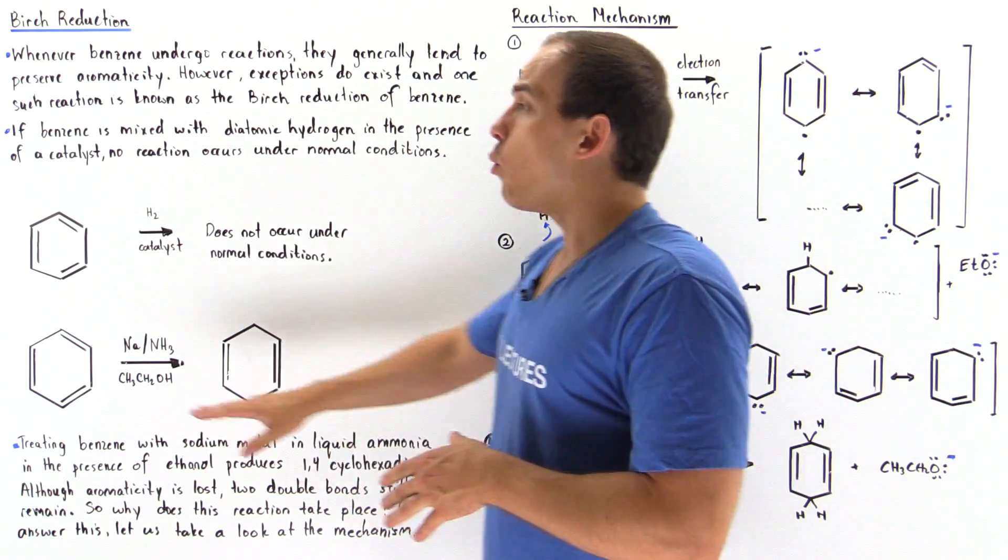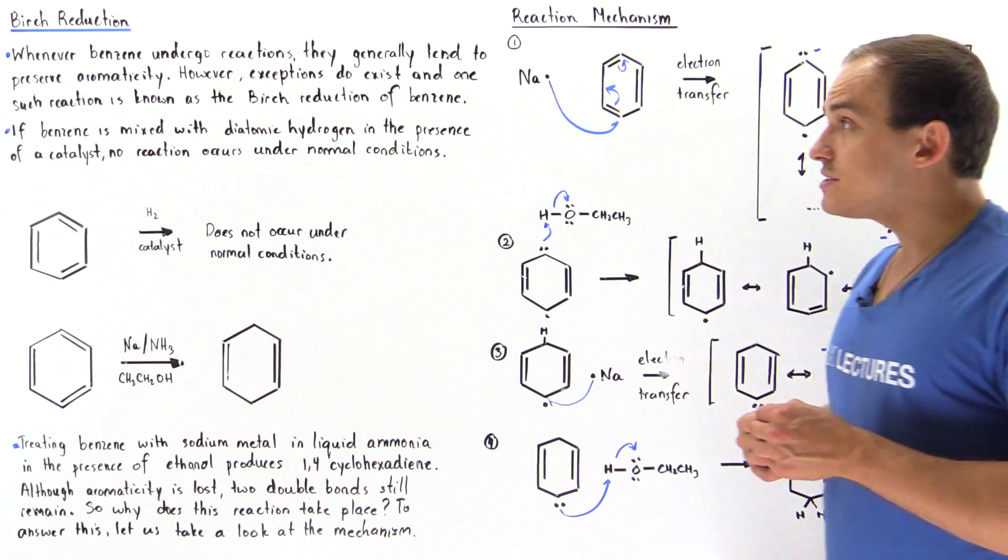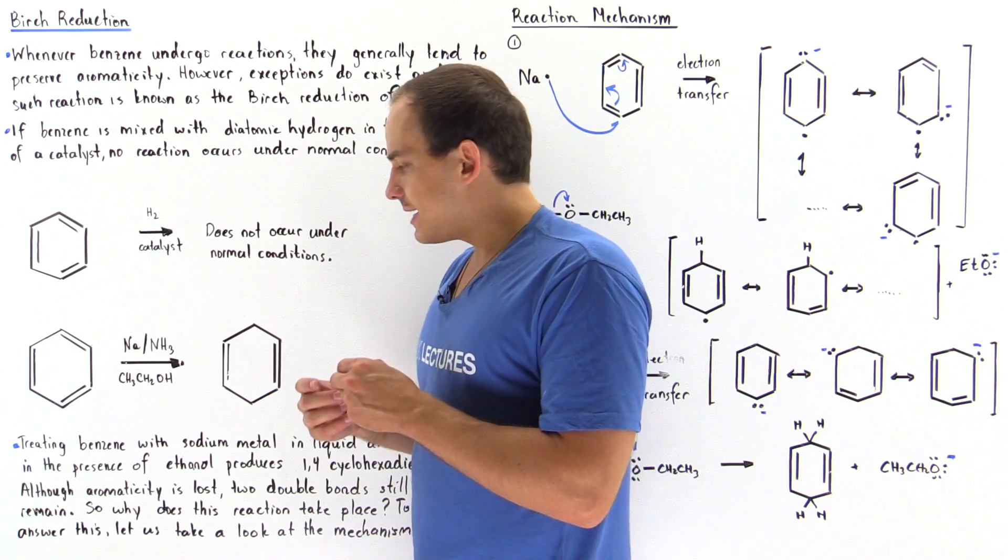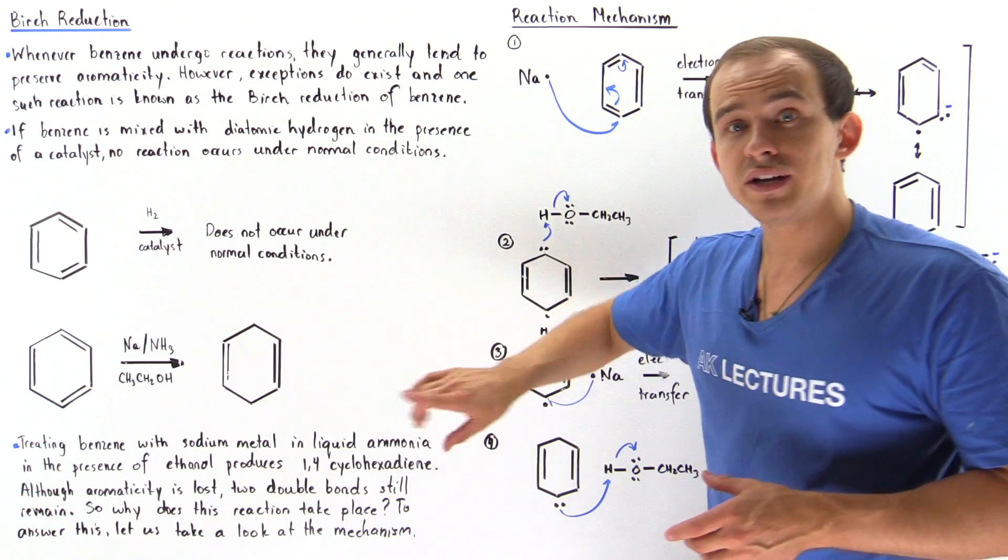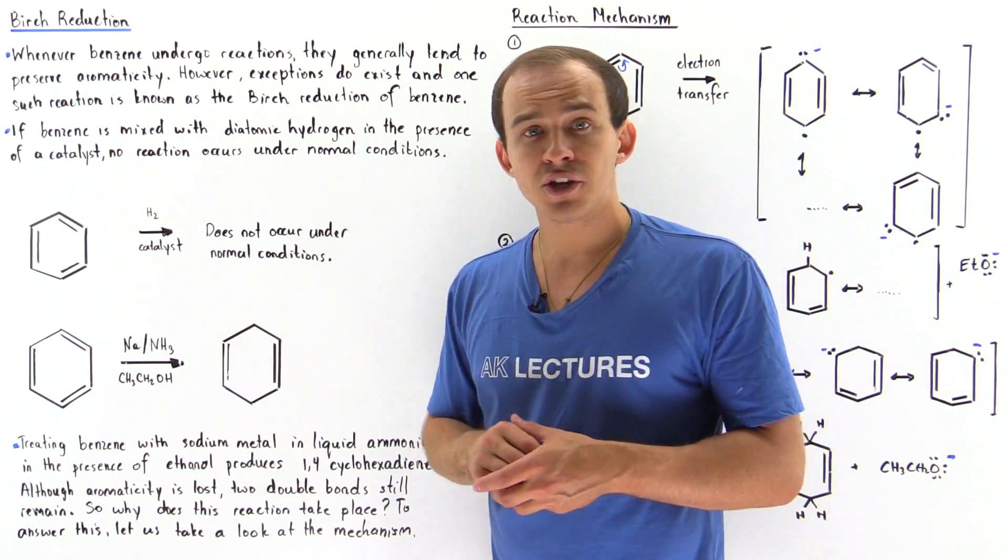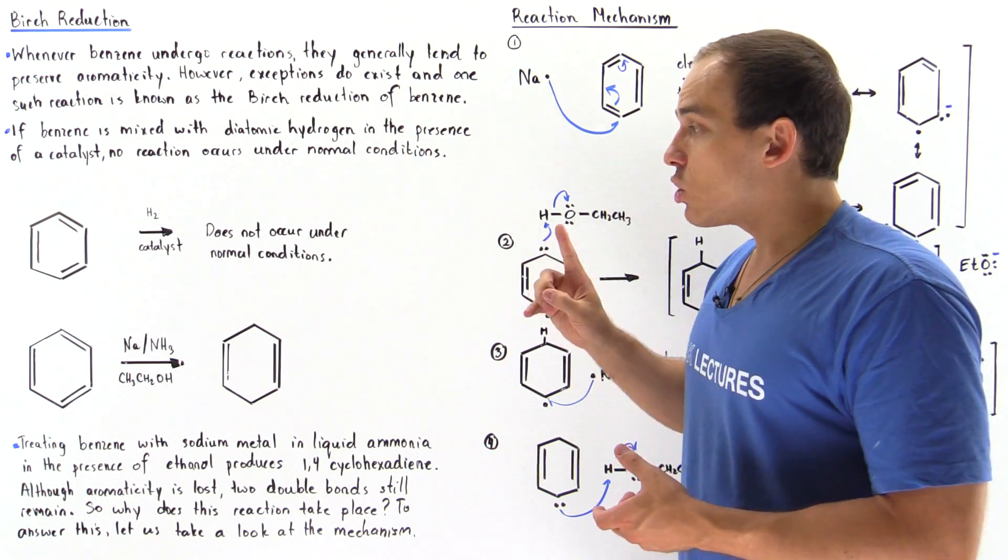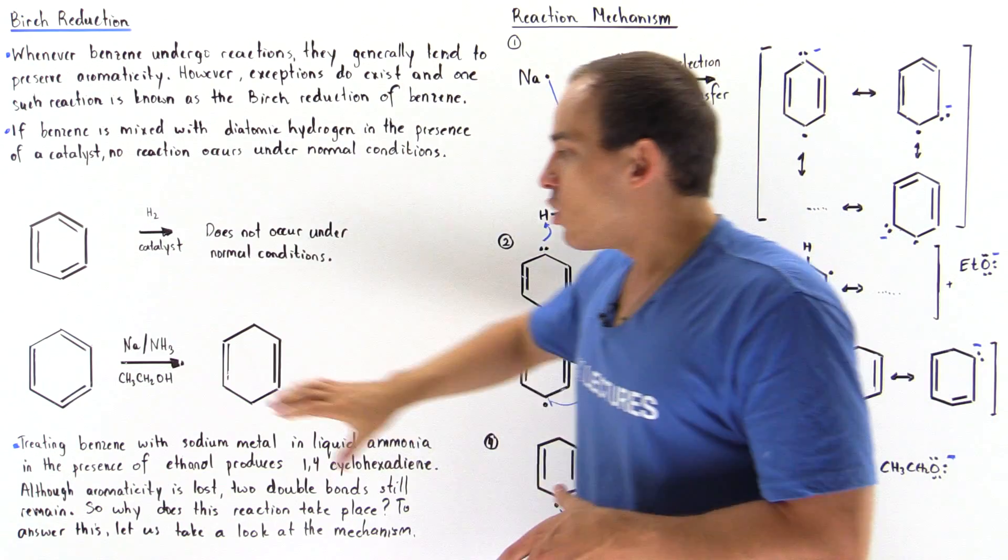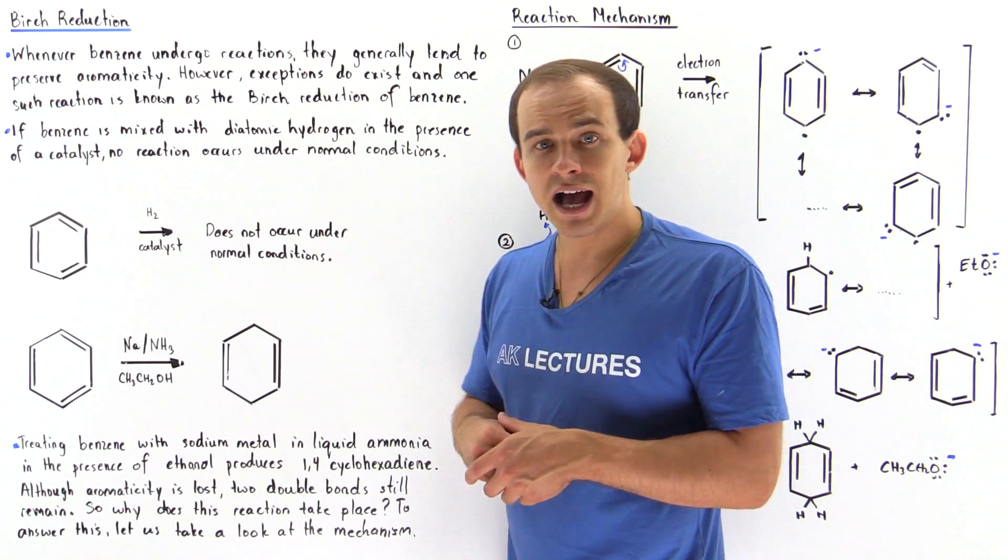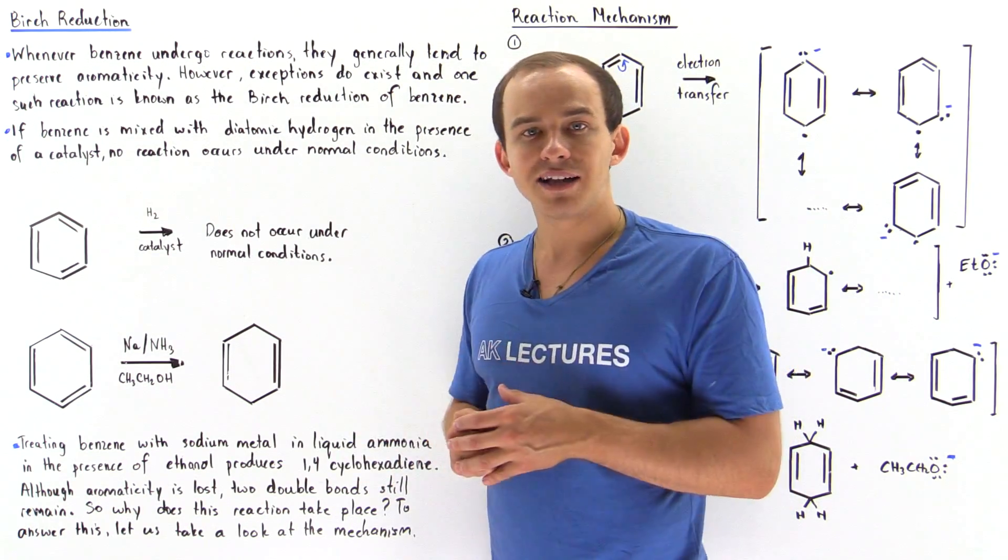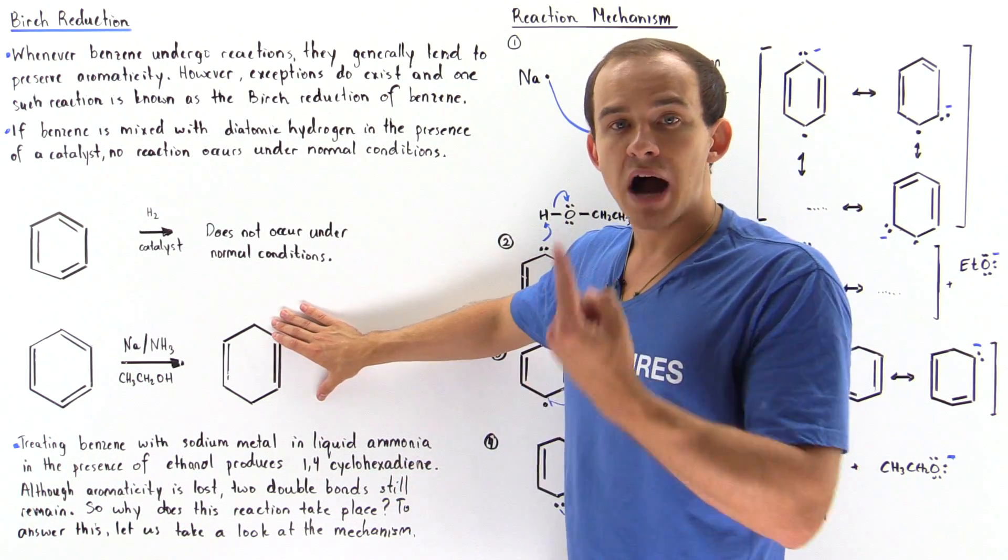Now, the question is, why does the Birch reduction reaction actually take place? Once again, the Birch reduction reaction is the mixing of benzene with sodium in the presence of liquid ammonia, as well as a little bit of ethanol, and this produces 1,4-cyclohexadiene. The first thing that we should notice is, when we go from the reactant benzene to the product 1,4-cyclohexadiene, there are still two pi bonds left in this product.